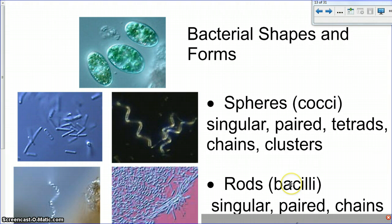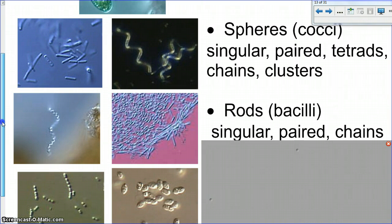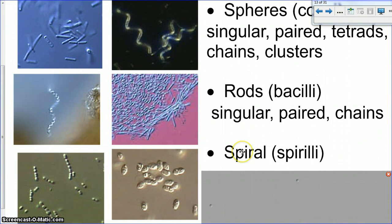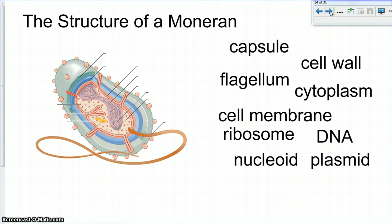If it's rod-shaped, we use the suffix bacilli or bacillus. So these ones can be either singular, so one rod, they can be paired rods, or they can be chains of rods. And then the last one would be a spiral shape. So if they are spiral shaped, usually spirilli is at the end of the name. So here's an example of a bacteria that's spiral-shaped. So those are the three types of shapes they tend to use. There's also colors that we use to distinguish bacteria with as well.